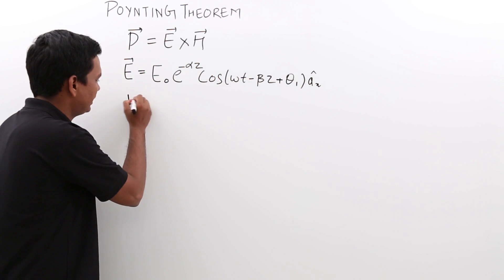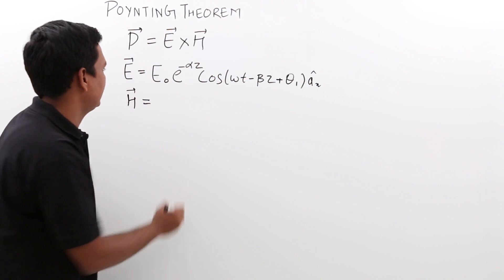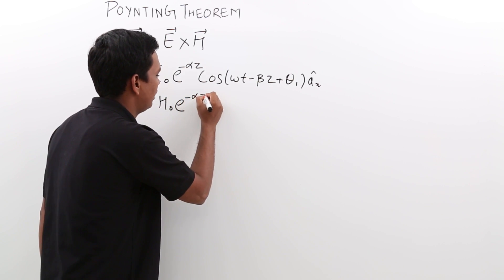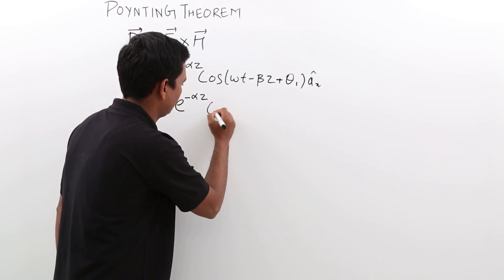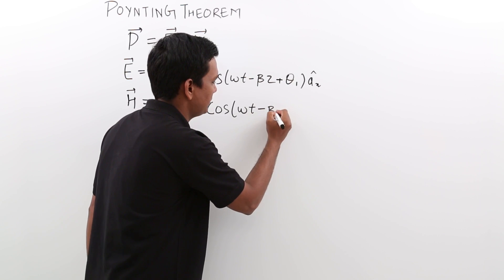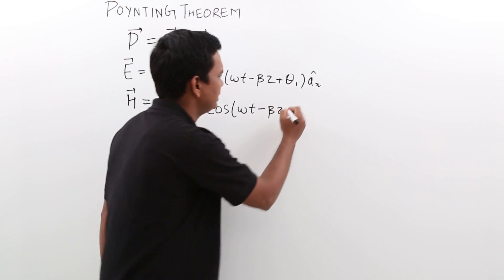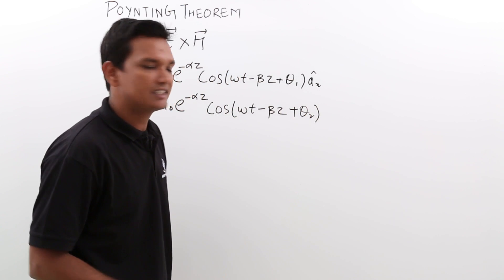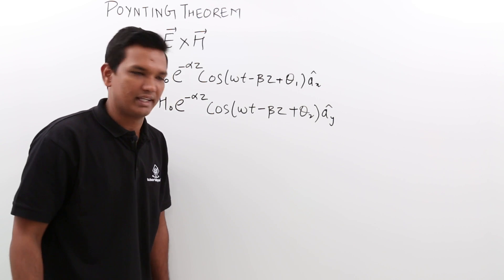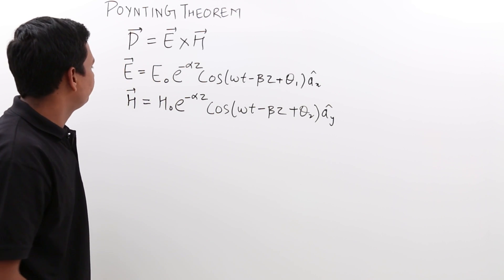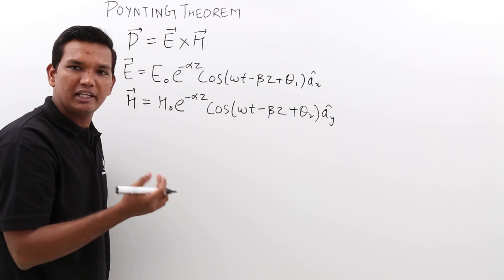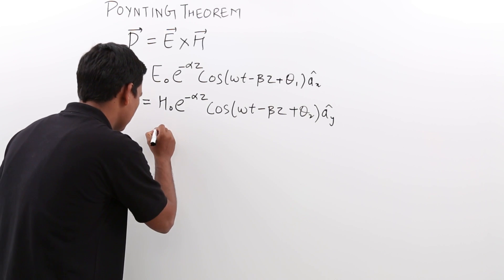Let me take the magnetic field H as H-naught e to the power minus alpha-z, cos(omega-t minus beta-z plus theta-2), directed along A y-cap, which is along the y-axis. To find the Poynting vector, we take the cross product E cross H.